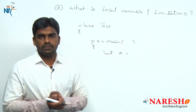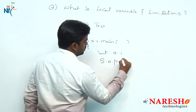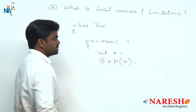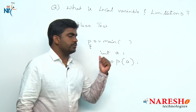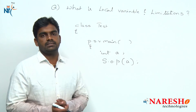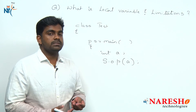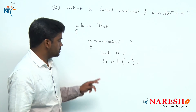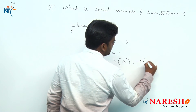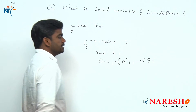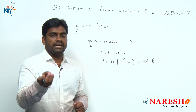Whenever you declare a local variable, you cannot use it directly. Suppose if you try to print directly using System.out.println — how do you access a local variable? We can access local variables directly, unlike class-level static variables accessed via class name or object-level variables. But if you try to use a local variable without initialization, you will get a compile-time error.